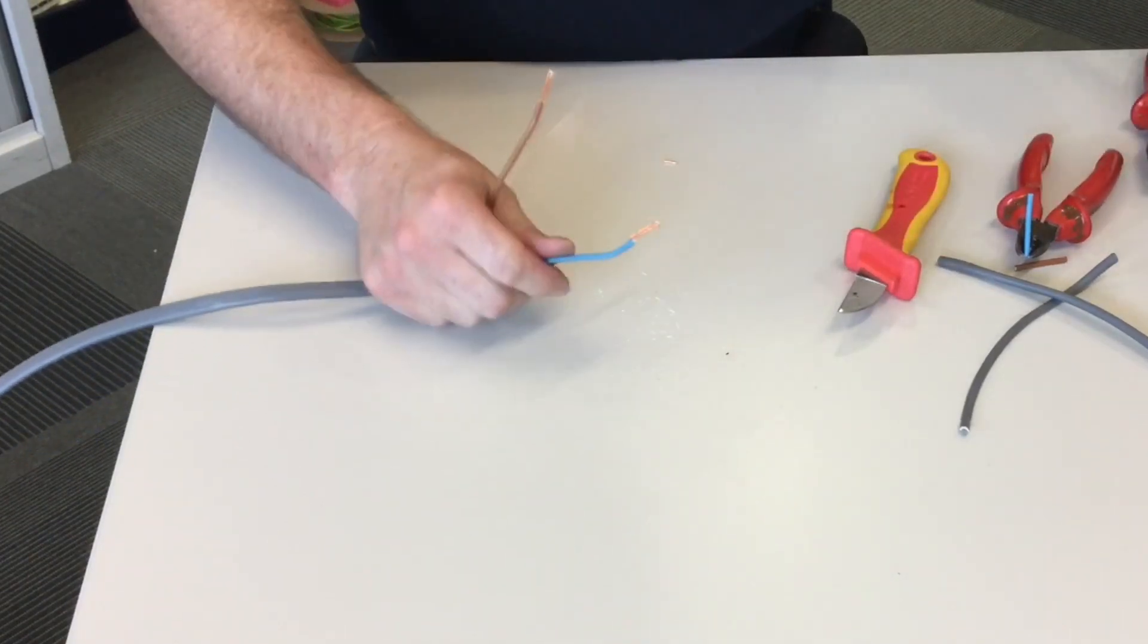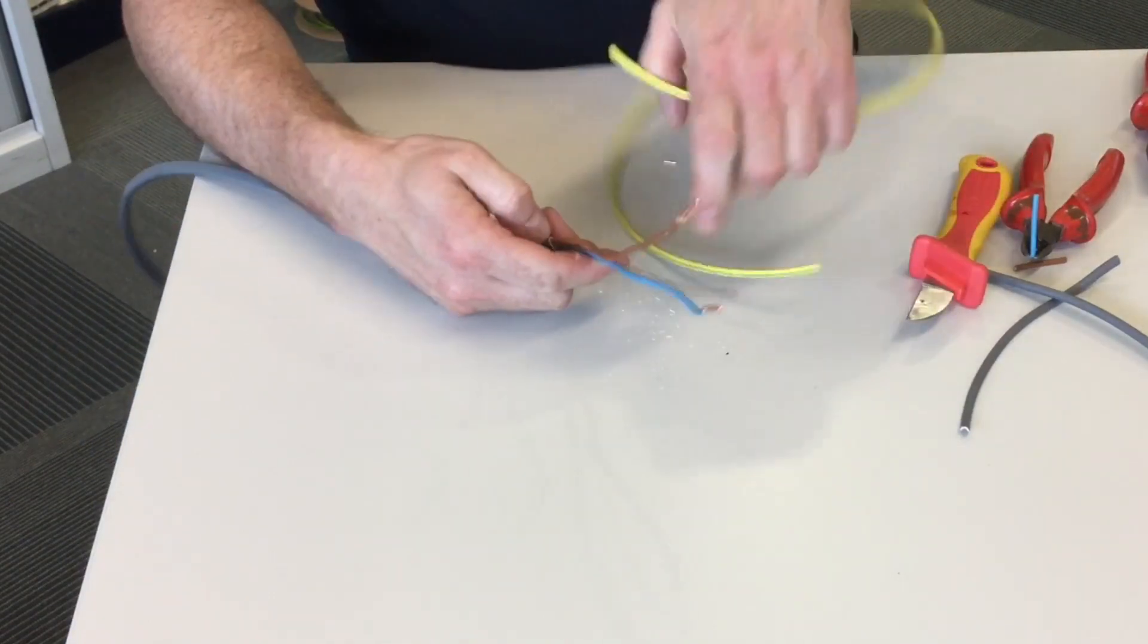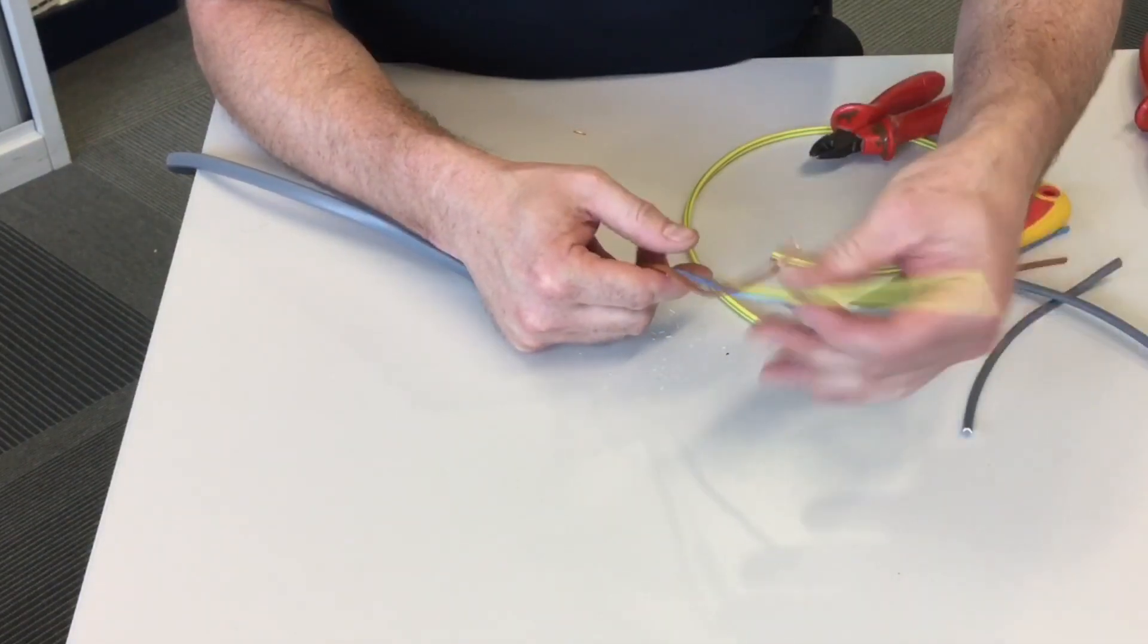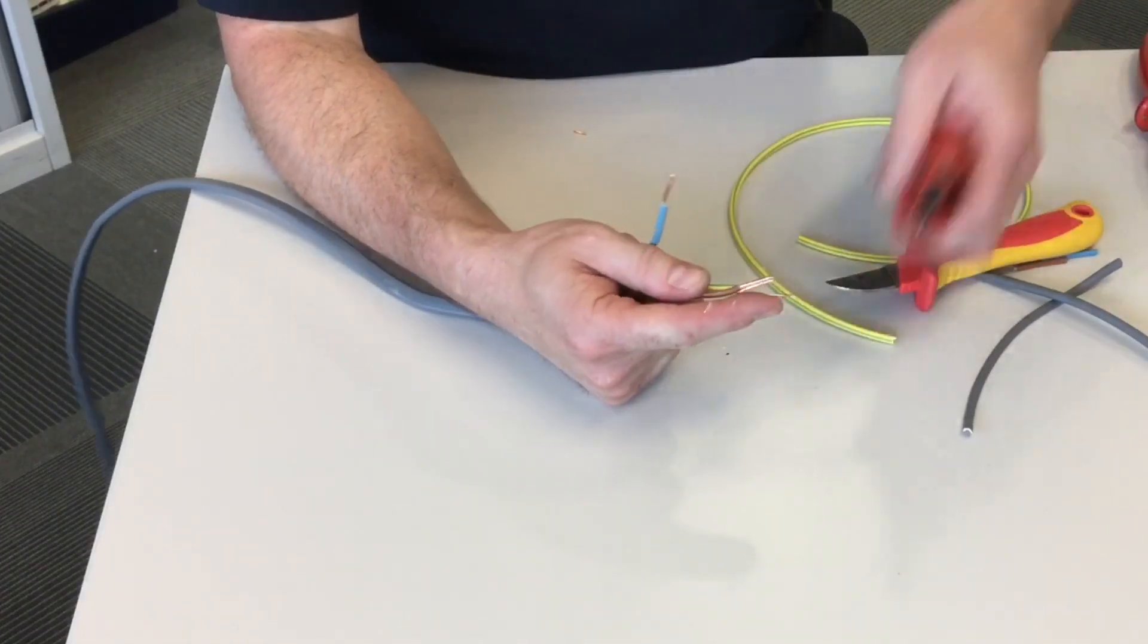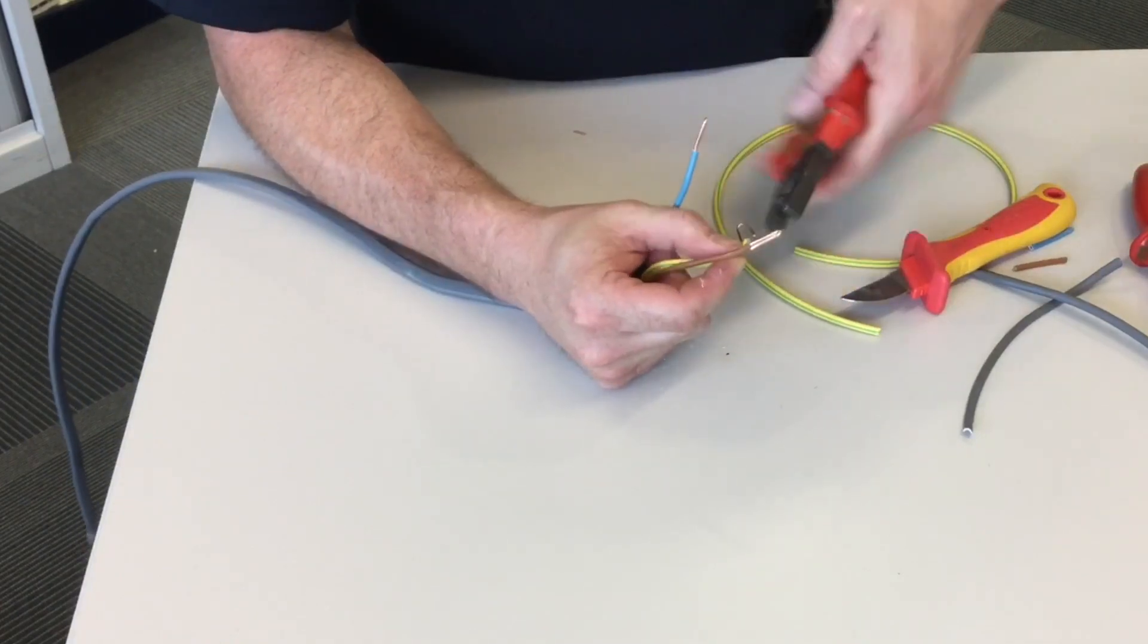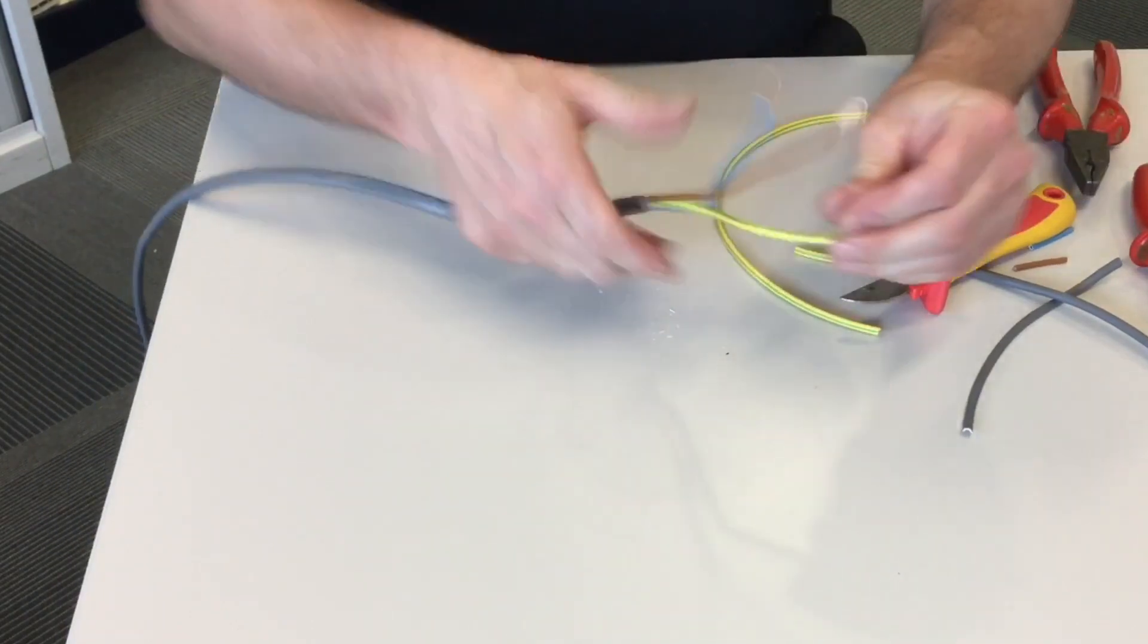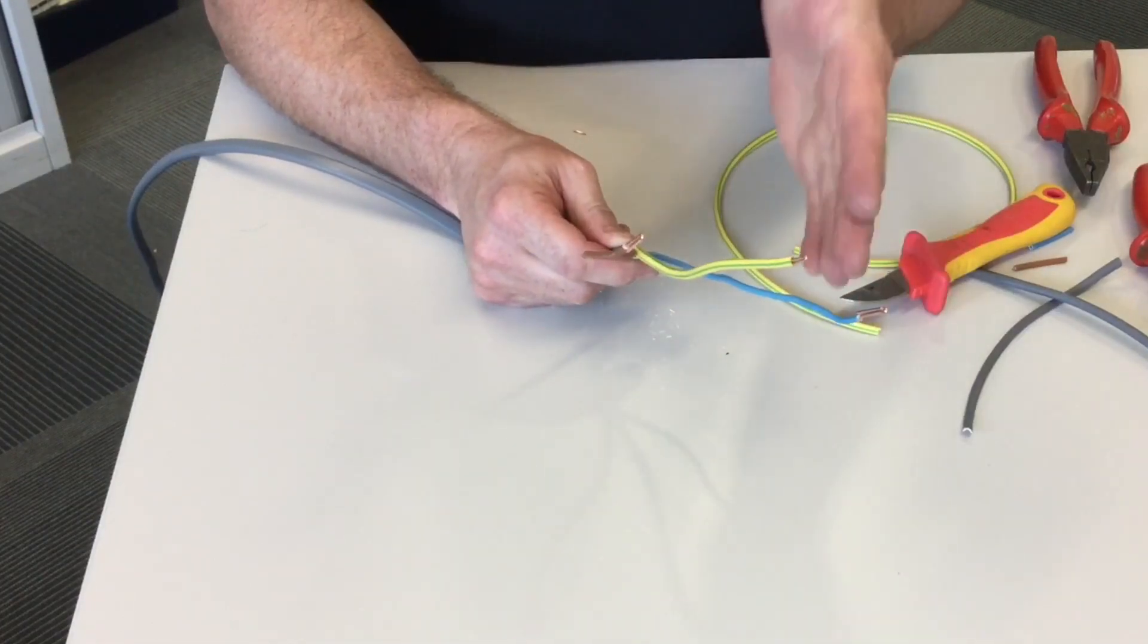And then repeat the process for the circuit protective conductor. Straighten it out, approximately the same length with the PVC that we are adding to identify the conductor. Pass it down. Just going to trim the end off, it's a little bit sharp. Take my pliers and make my final doubled over connection. So exactly the same process but this time using 2.5 millimeter squared cable in order to make the terminations.